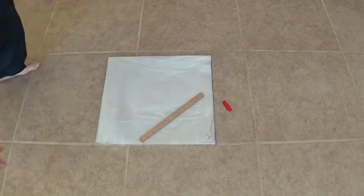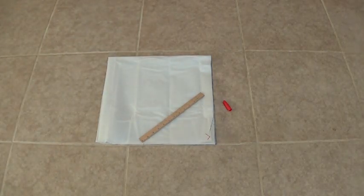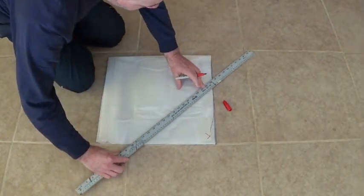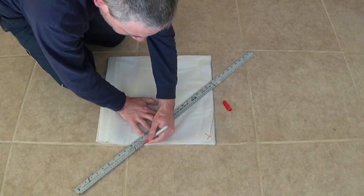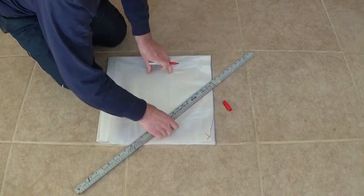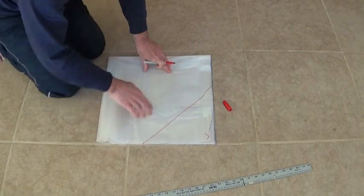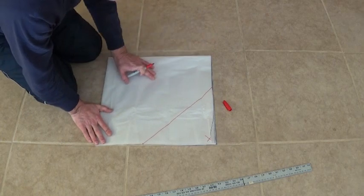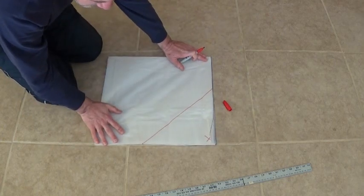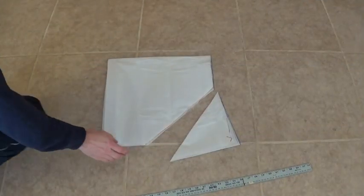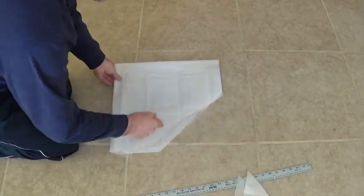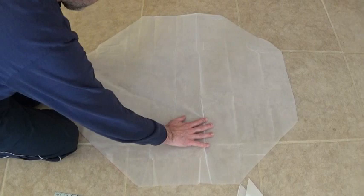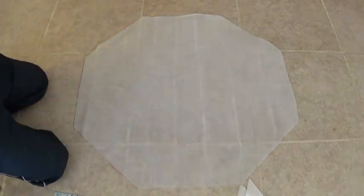And then we just need a longer ruler and we'll go ahead and draw a line that connects those two points. And then go ahead and cut that off. Make sure that while you're doing your cut, everything stays pretty accurate as far as the corners nice and flat. And these parts we don't need, but what we're going to end up with is an eight-sided parachute that's pretty accurate on all eight sides.